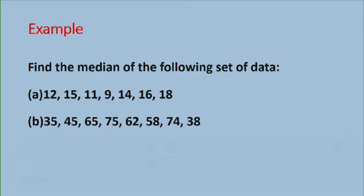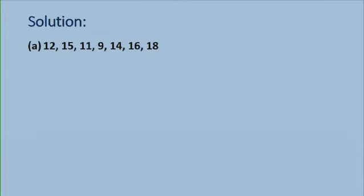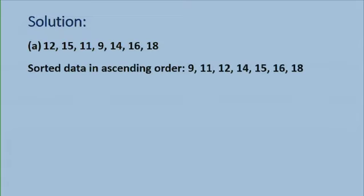Let us look at an example. Find the median of the following set of data. Part A: 12, 15, 11, 9, 14, 16, and 18. So the first step will be to rearrange this set of data, to sort the data. Here we are going to rearrange it in ascending order. So you have 9, 11, 12, 14, 15, 16, and 18.